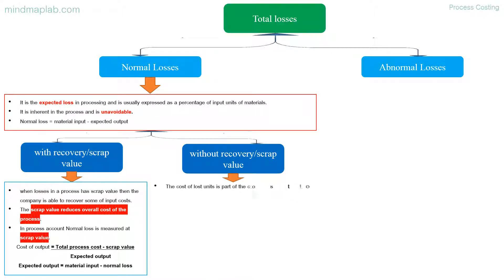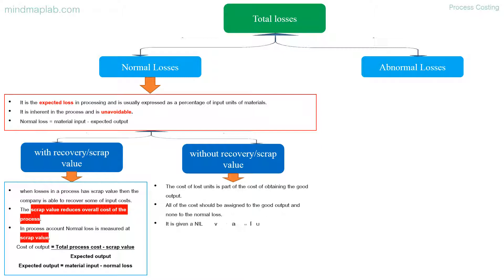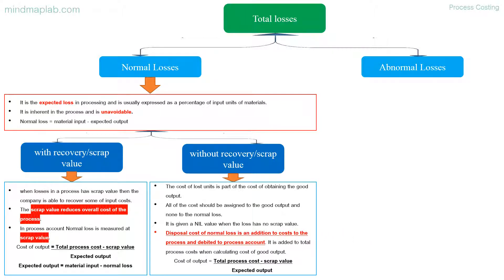Normal loss without recovery scrap value: the cost of lost units is part of the cost of obtaining the good output. All of the cost should be assigned to the good output and none to the normal loss — it is given a nil value. Disposal cost of normal loss is in addition to process costs and is debited to the process account. Cost of output equals total process cost minus scrap value, divided by expected output.